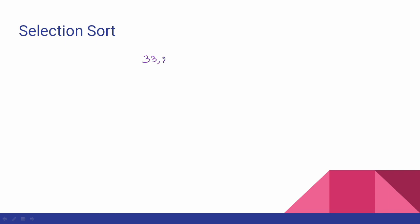Hi friends, in this video we are going to talk about the Selection Sort algorithm. In the previous video, we talked about the Bubble Sort. Now for Selection Sort, there is a short example. So 33, 21, 14, 3 and 19. The algorithm is called Selection Sort. What do we do? We select the minimum value — that is the first step. The second step is Swap. That is the algorithm.